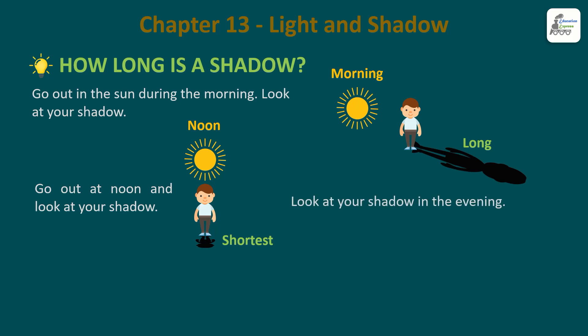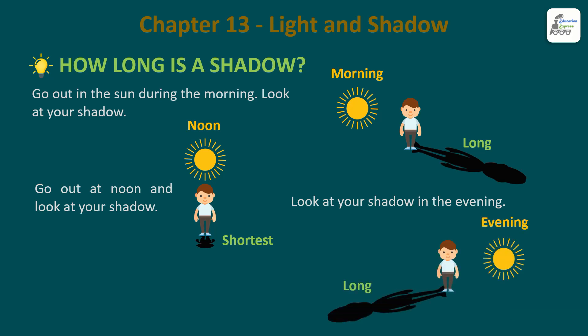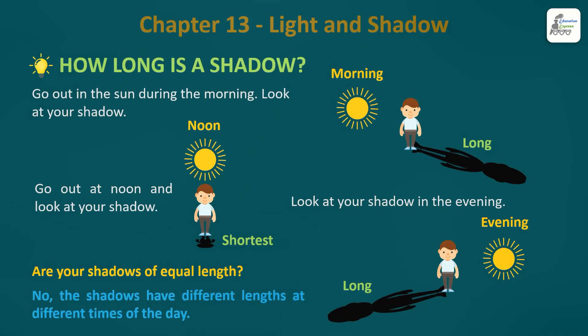Then look at your shadow in the evening - in the evening you will also see a long shadow. What happens is - in the morning the shadow is long, and then it will be short at noon - shortest at noon. Are your shadows of equal length at different times? No - shadows have different lengths at different times of the day. Every hour the length changes - in the morning it will be long, at noon it will be shortest.